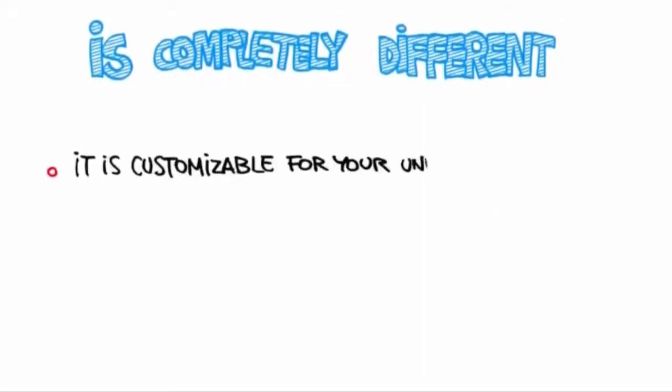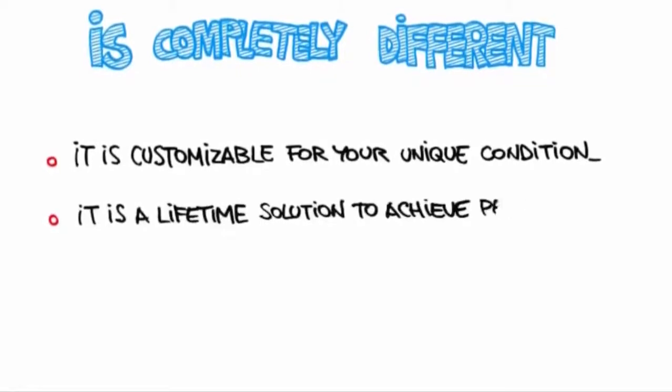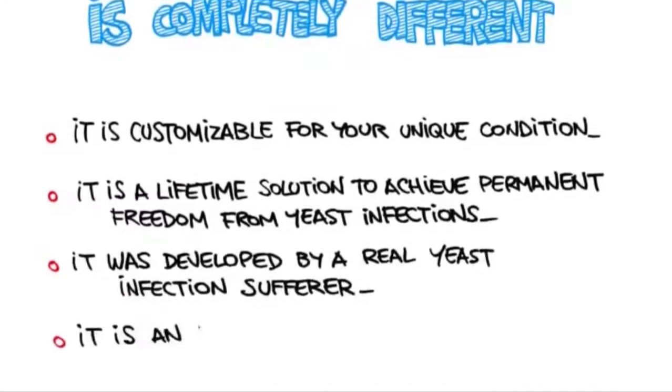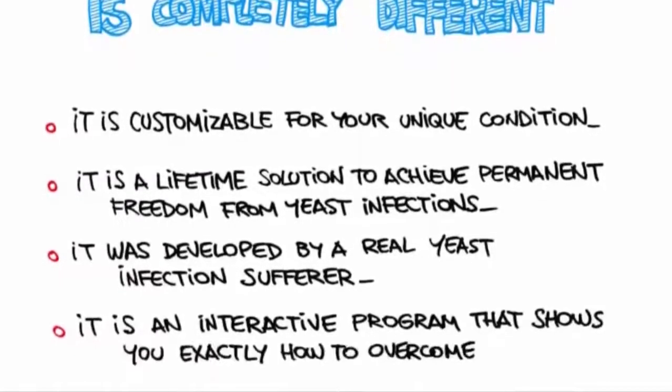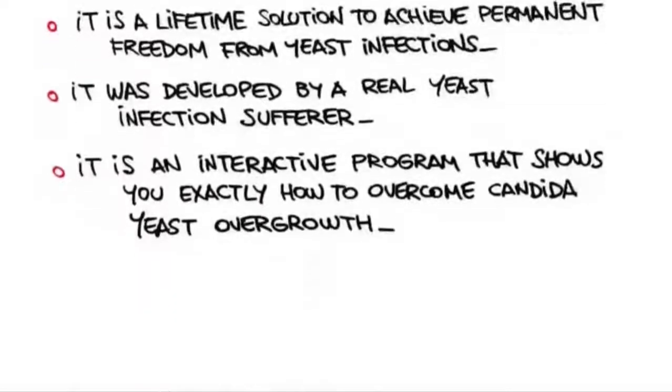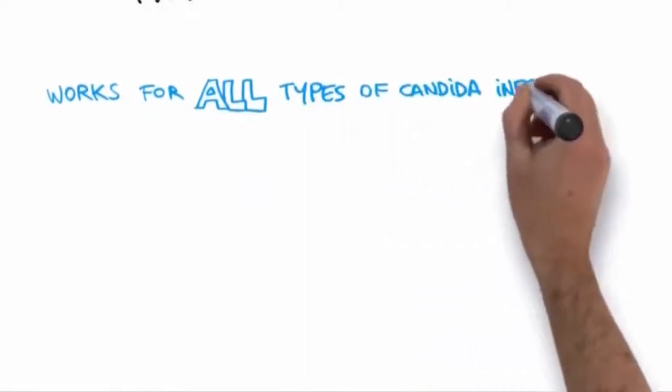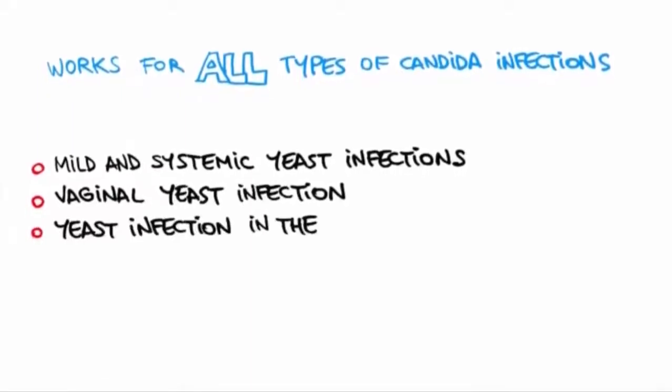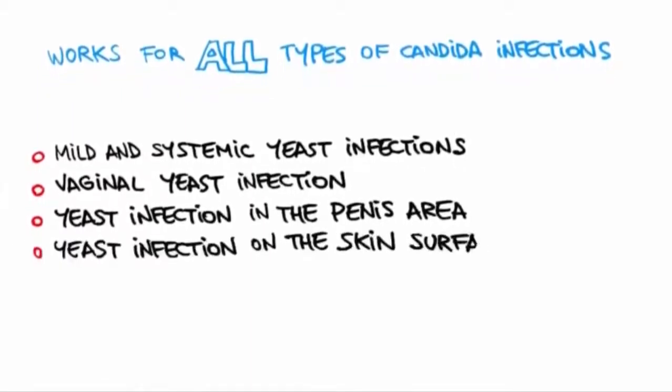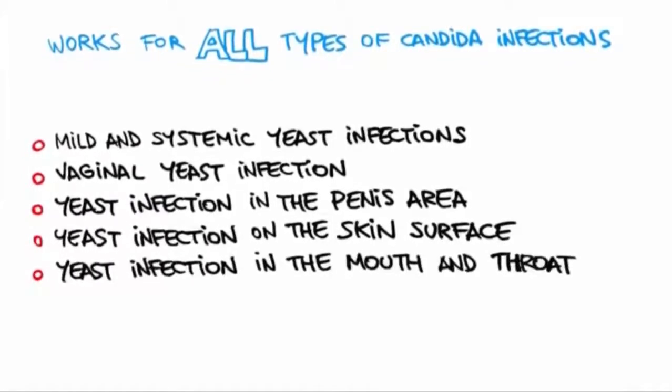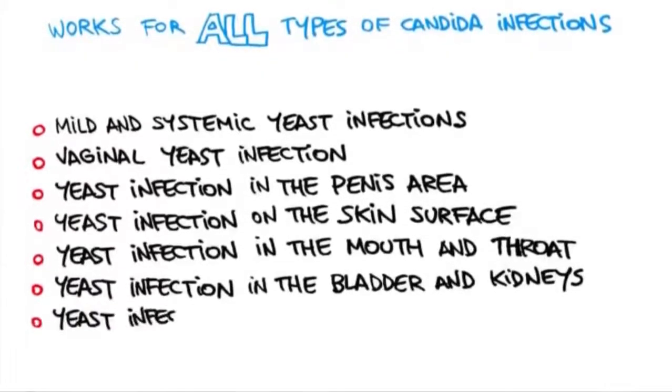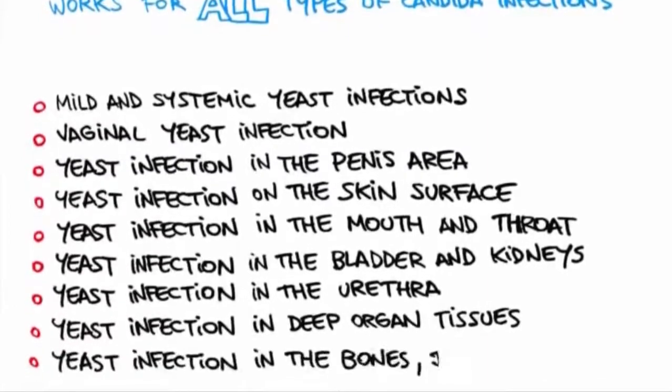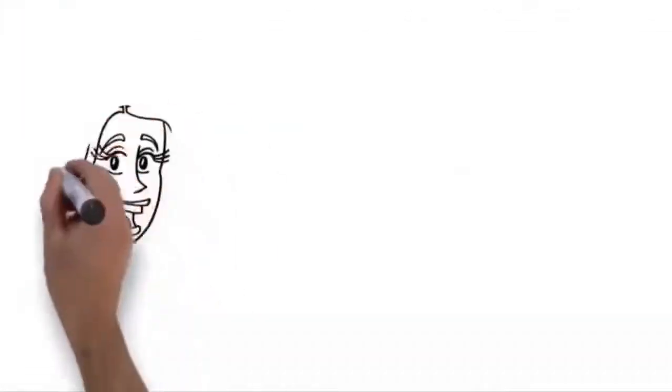Yeast Infection No More is completely different from any other information source or Candida overgrowth solution because it is customizable for your unique condition. It is a lifetime solution to achieve permanent freedom from yeast infections. It was developed by a real yeast infection sufferer. It is an interactive program that shows you exactly how to overcome Candida yeast overgrowth. Yeast Infection No More works for all types of Candida infections, including mild and systemic yeast infections, vaginal yeast infection, yeast infection in the penis area, yeast infection on the skin surface, yeast infection in the mouth and throat, yeast infection in the bladder and kidneys, yeast infection in the urethra, yeast infection in deep organ tissues, yeast infection in the bones, joints, and muscles.